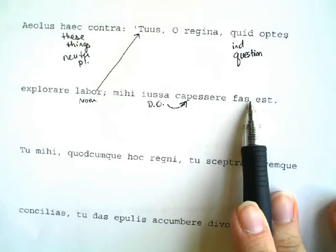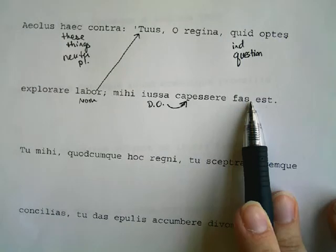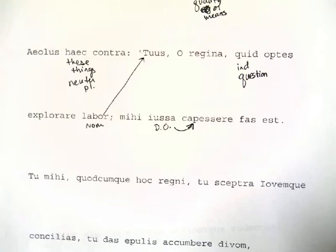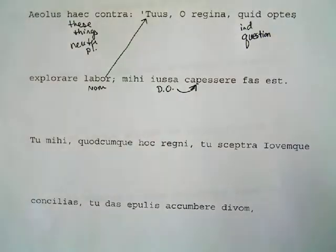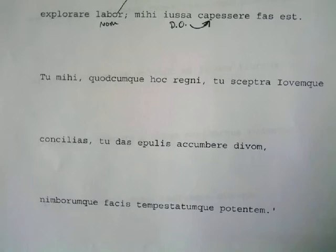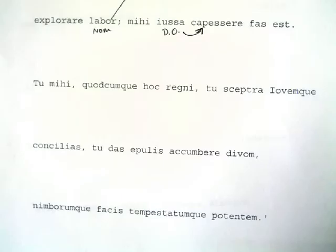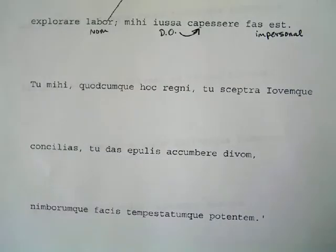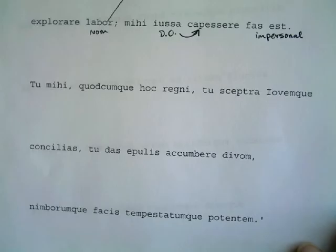Fas est — 'it is proper, it is right, it is good.' Fas is almost untranslatable; it means something is divinely sanctioned. So: 'It is proper for me to perform your orders.' A queen has one task — to decide what she wants; someone like Aeolus must simply obey. He can pull back the reins or let them go only when Jove orders it. Fas est is called an impersonal — it has no personal subject. The opposite of fas is nefas — n-e-f-a-s — from which we get the word 'nefarious.' Nefas means 'improper,' against what the gods want.